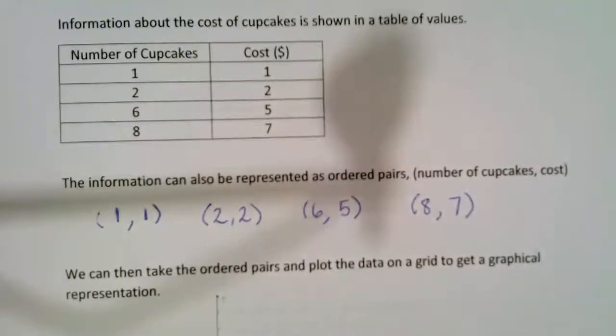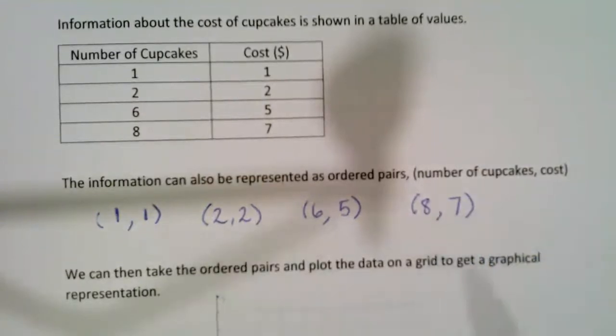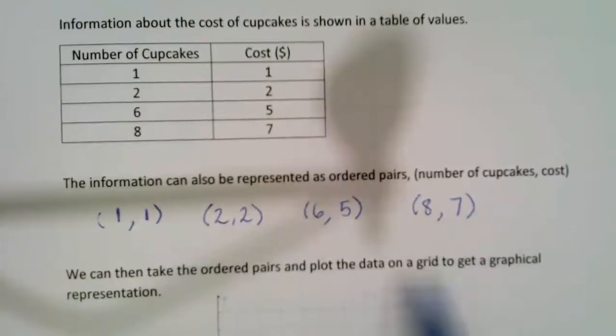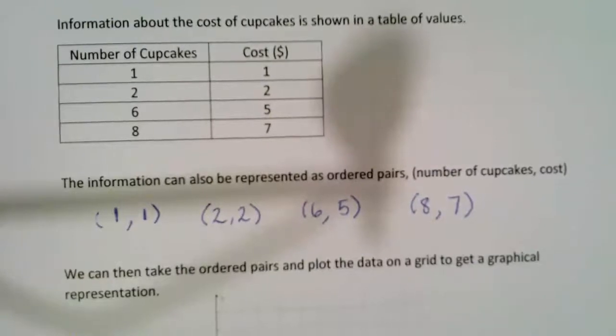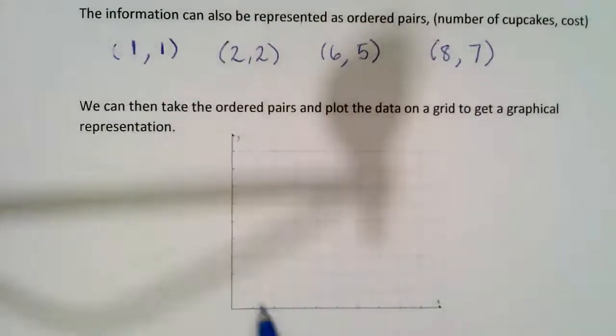Now once we have this information in ordered pairs, it's sometimes more difficult to see the relationship between the numbers. So if that happens, we can take the information that's in ordered pairs and plot the points on a grid to get a different representation of the information. So what we're going to do is I've already provided a grid. Right now it's labeled X and Y.